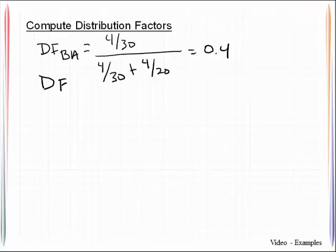And then we note that the distribution factor in each joint must be equal to 1 so if we want to find out what this one is we can just go ahead and subtract off. So we get 0.4 and 0.6.